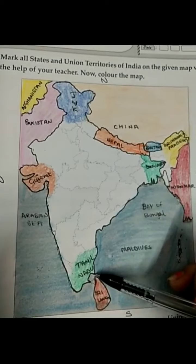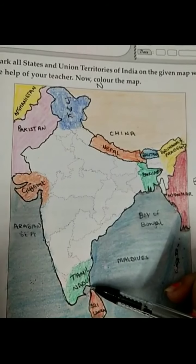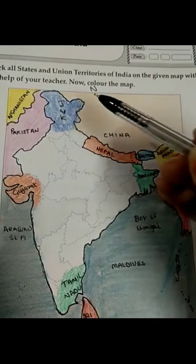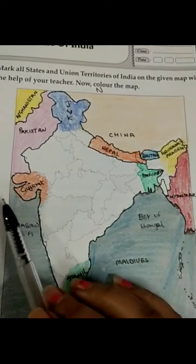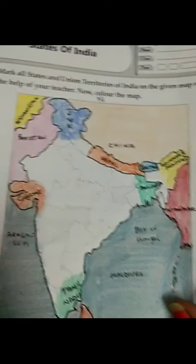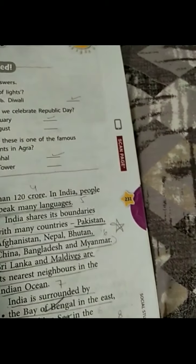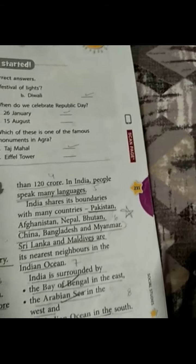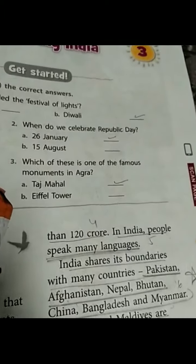The mainland spreads from Kashmir to Tamil Nadu and Gujarat to Arunachal Pradesh — means from north to south and from west to east. India spreads over 32,87,263 square kilometers.